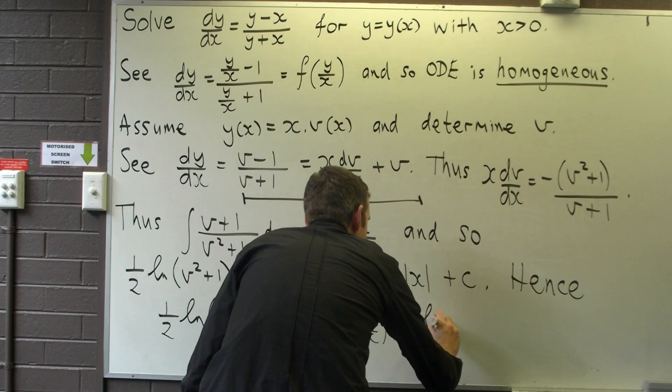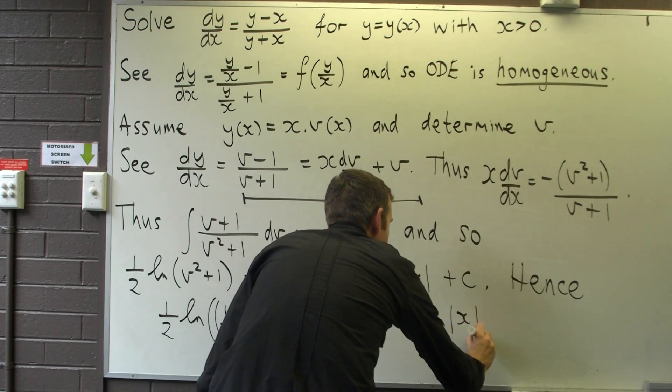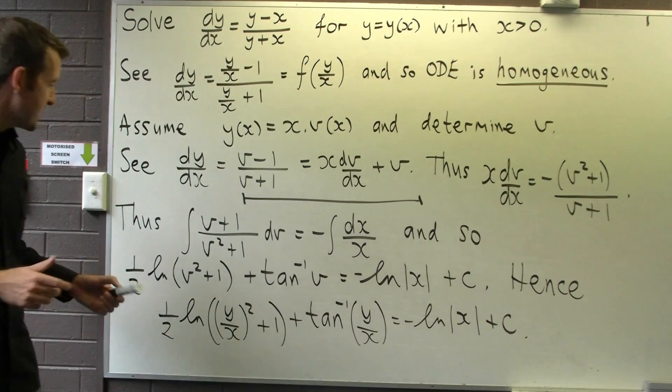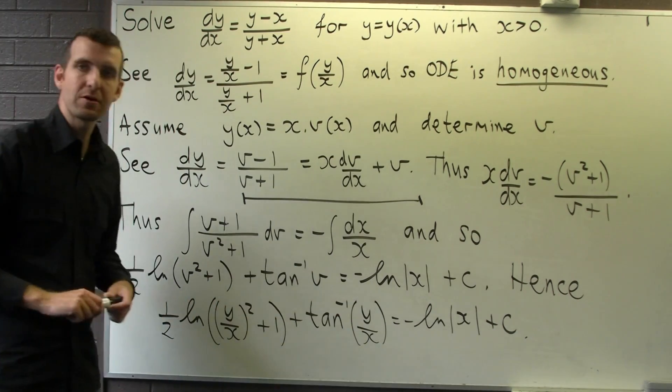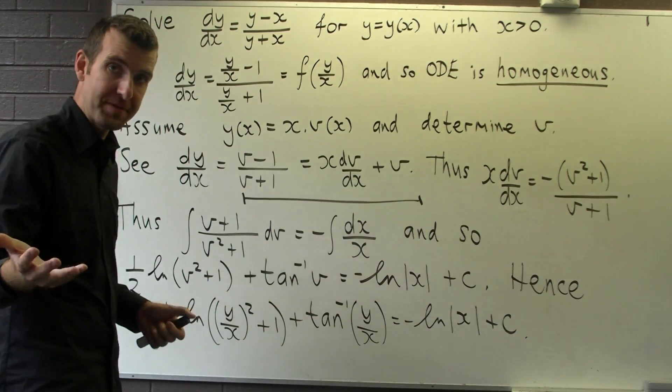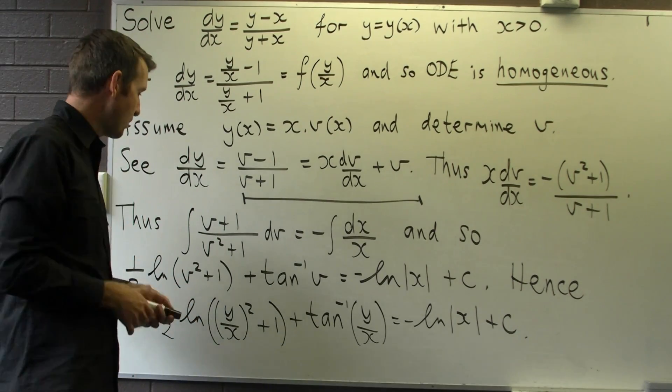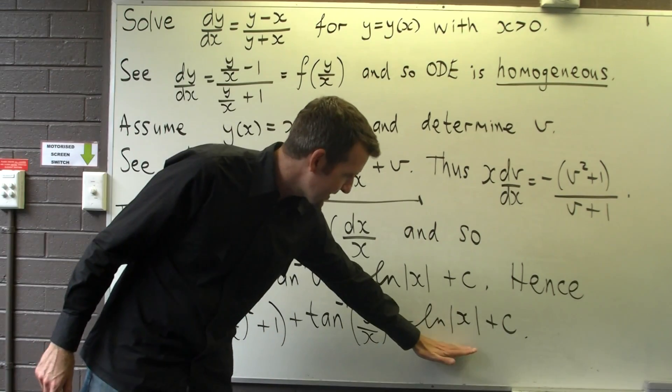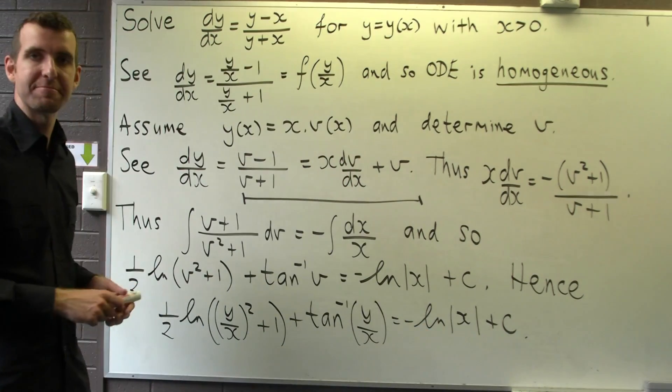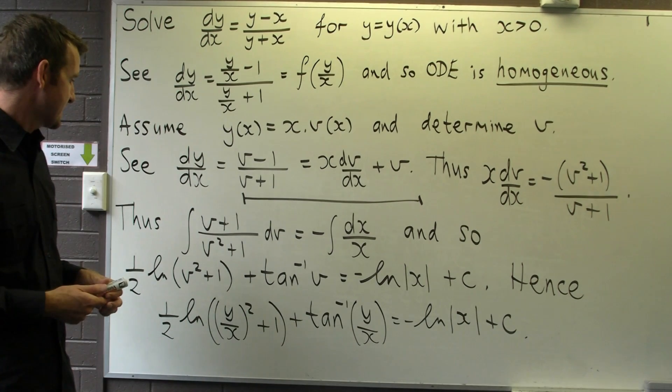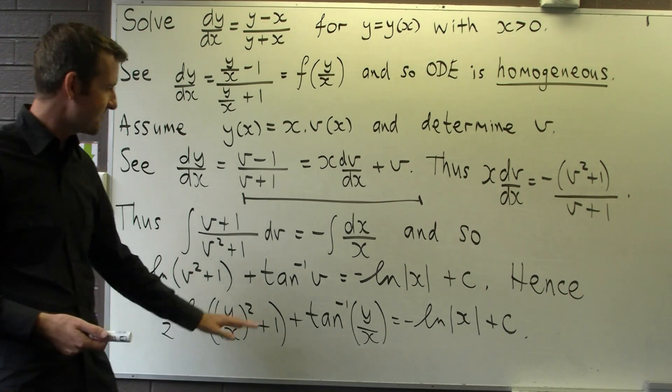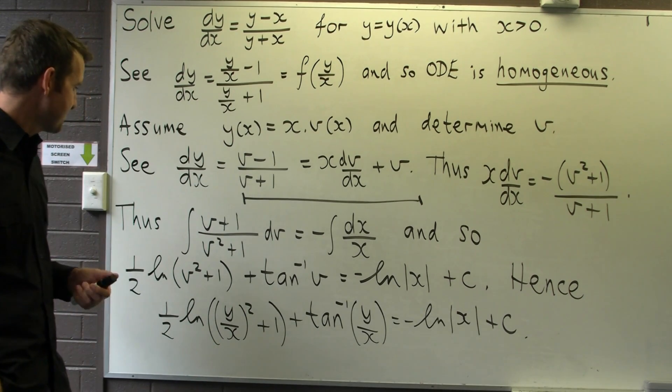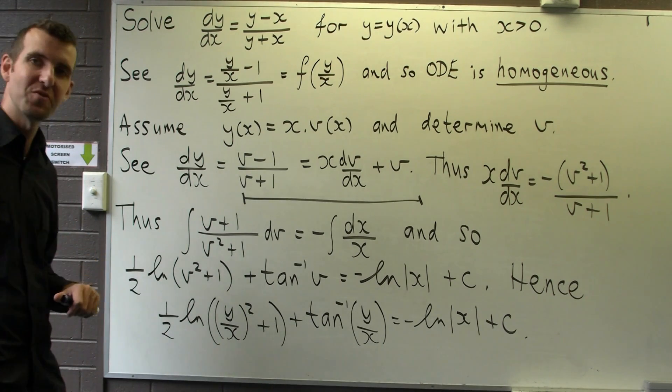Now you can clean this up a bit, this is in what's called implicit form, in other words we haven't made Y the subject. In particular you can clean this up and get this to cancel with the minus log absolute value x. So this is about as far as we can go, a little bit of cleaning up needed perhaps, but this is sufficient to solve the problem.